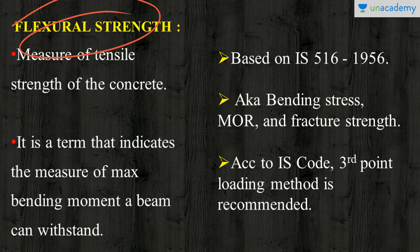According to IS code, it recommends the third point loading method for performing this experiment. There are two types: central point loading and third point loading. In central point loading, the load is applied at the center of the specimen where the bending moment is maximum, and the fracture will be in the center. In third point loading, it is done through two rollers on the top side, and the fracture will happen anywhere in the one-third of the tensile zone where there is a weaker section.